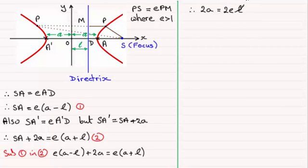And from this, if we divide both sides by 2E, we get L to be equal to A over E.